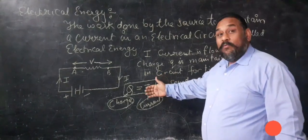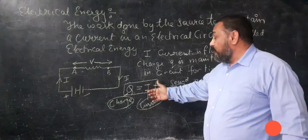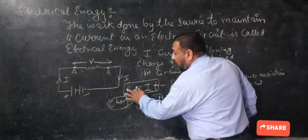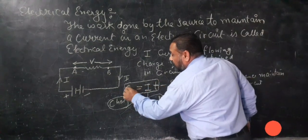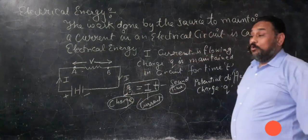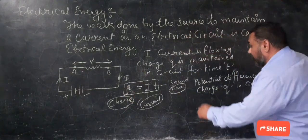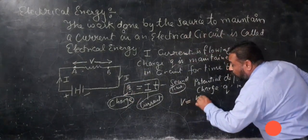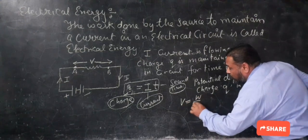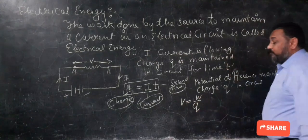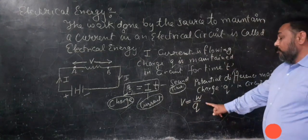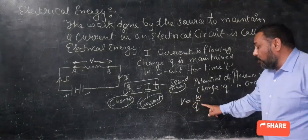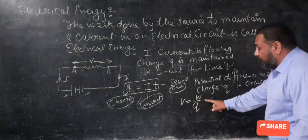When charge Q flows in the circuit, we know the relation V equal to W over Q.